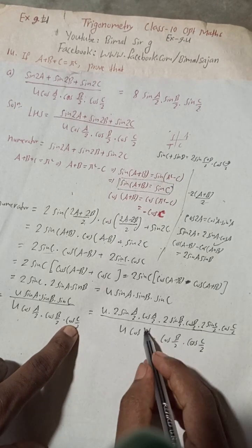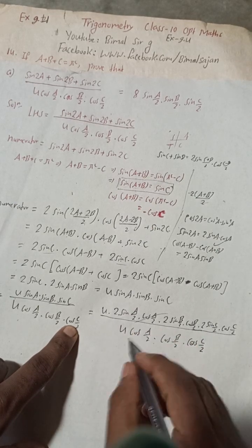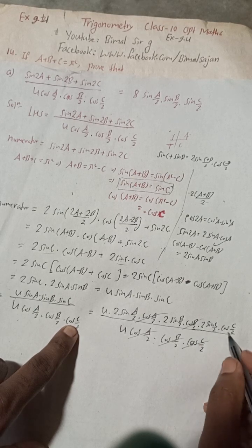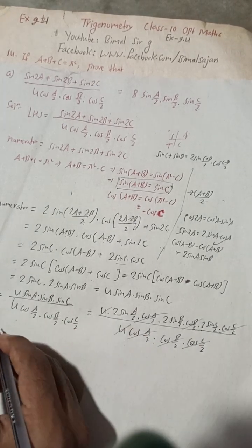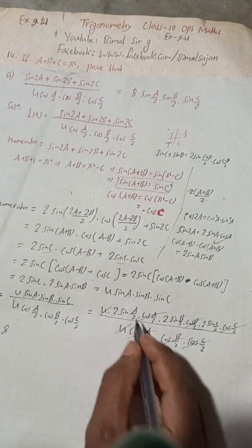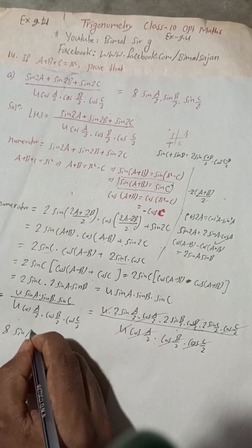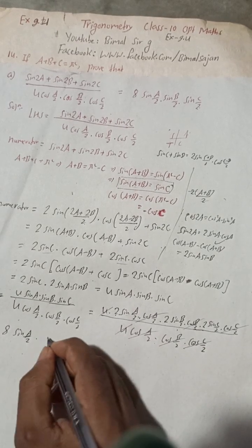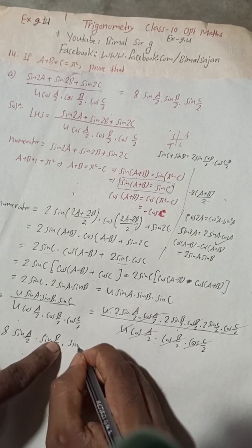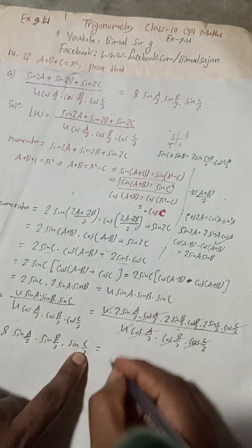Since all terms are in multiplied form, cos(a/2) cancels with cos(a/2), cos(b/2) cancels with cos(b/2), cos(c/2) cancels with cos(c/2), and the factor 4 cancels with 4. What remains is 2 × 2 × 2 = 8, giving us 8 sin(a/2) · sin(b/2) · sin(c/2), which equals the RHS. Hence proved.